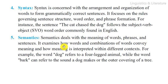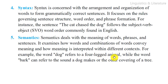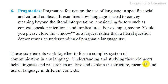Semantics examines how words and combinations of words convey meaning, and how meaning is interpreted within different contexts. For example, the word 'dog' refers to a four-legged animal, while the word 'bark' can refer to the sound a dog makes or the outer covering of a tree.